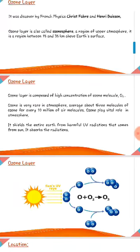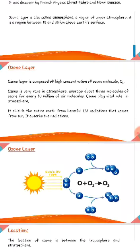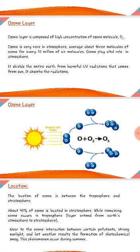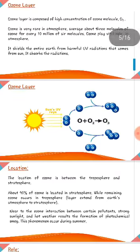The ozone layer is also called the ozonosphere — a region of the upper atmosphere located between 15 and 35 kilometers above Earth's surface. The ozone layer is composed of a high concentration of ozone molecules (O3). Ozone is very rare in the atmosphere, averaging about three molecules of ozone for every 10 million air molecules.